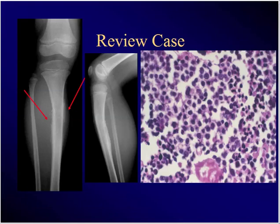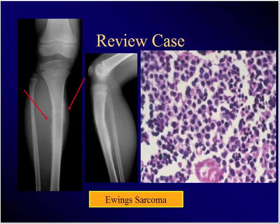Young person, skeletally mature, diaphyseal lesion, this change here — pain and a fullness in the calf with this histology. What's the diagnosis? Ewing's. You'll see one of those.